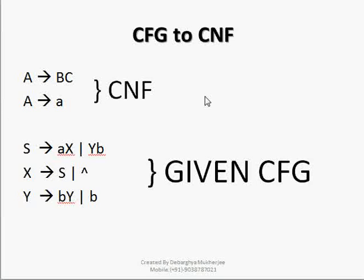If we recall, we know that any CNF or Chomsky Normal Form can be like this: A→BC and A→a, where this small 'a' is a terminal and capital B and C are non-terminals, and A is also a non-terminal. From this form we are going to convert the given CFG, which has three production rules: S→aXYb, X→S or null, and Y→bY or b.